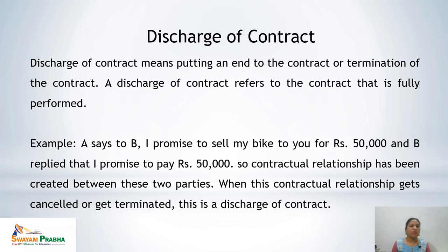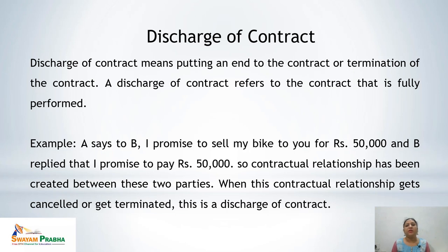The modes of discharge of contract are: discharge by agreement, by operation of law, by breach, by performance, by impossibility to perform, and by lapse of time. Discharge of contract means termination of the contract — to make the contract at an end. In formal words, discharge of contract means putting an end to the contract or termination of the contract.